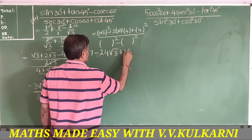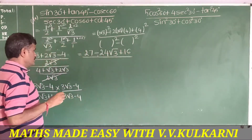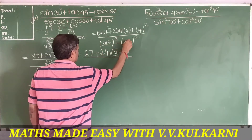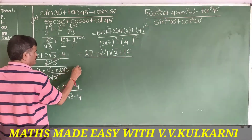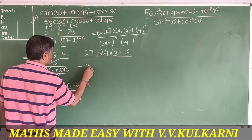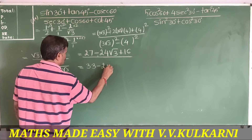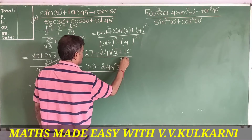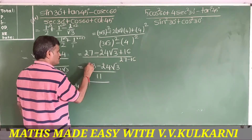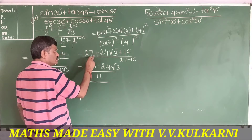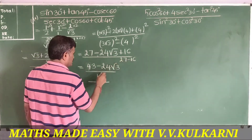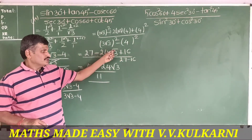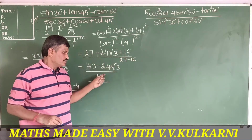4 squared is 16. In the denominator it is (3√3)² minus 4², which equals 27 minus 16 = 11. So the numerator is 27 plus 16 minus 24√3, which is 43 minus 24√3. The final answer is (43 minus 24√3) divided by 11.